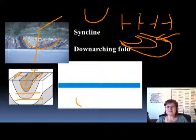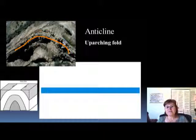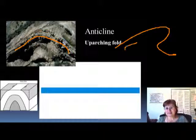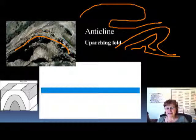It would be the same with the anticline. Going back — if we're talking about an anticline, this is a symmetrical one, but if from one side the pressure was bigger, this is going to be an asymmetrical anticline, and it could be completely overfolded like this.